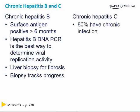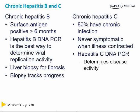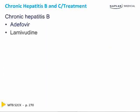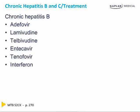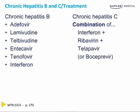80% of those patients who contract hep C will have it chronically. The patients are never symptomatic when they contract the virus. A hep C RNA PCR helps determine disease activity. Treatment of hepatitis B uses antivirals such as adefovir, lamivudine, telbivudine, entecavir, tenofovir, or interferon. Treatment of chronic hep C is a combination of interferon, ribavirin, and a protease inhibitor such as telaprevir or boceprevir.